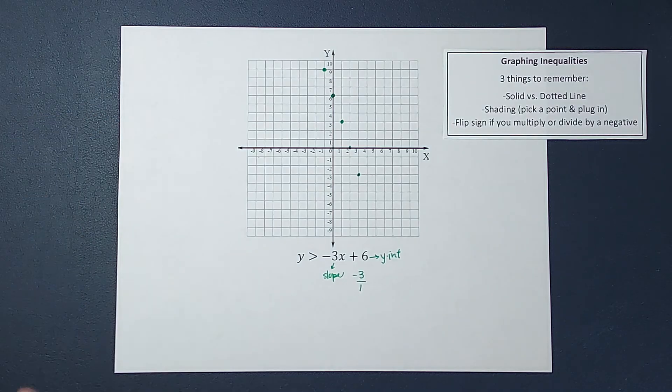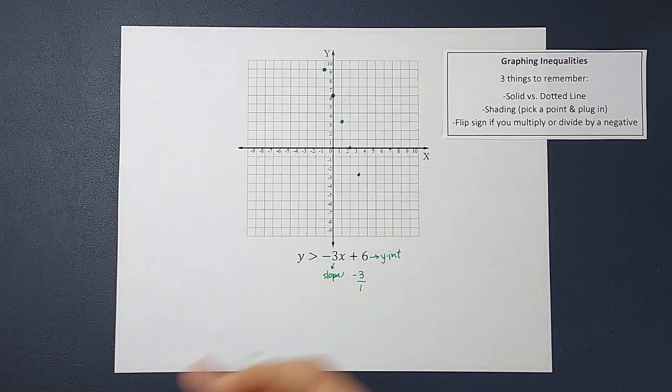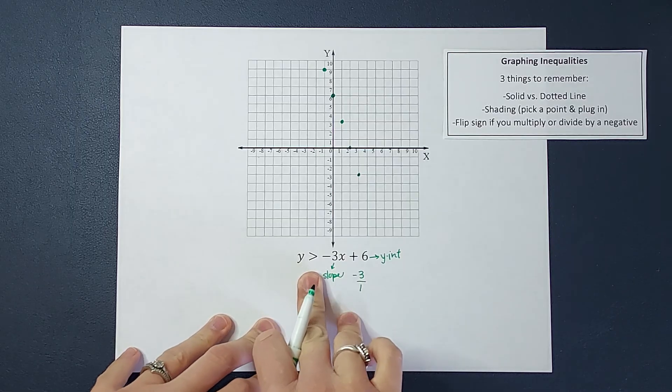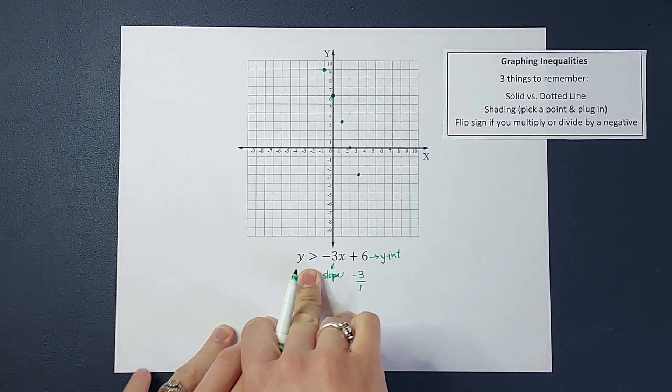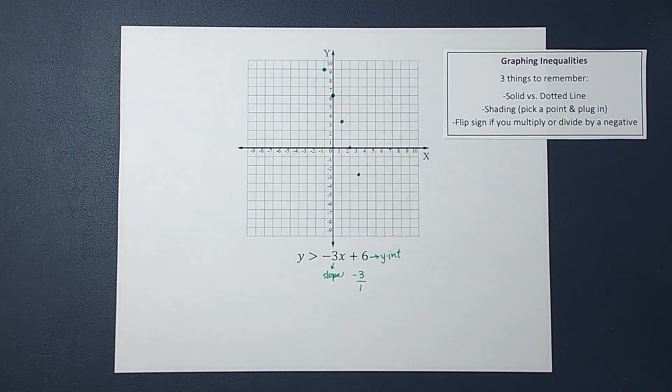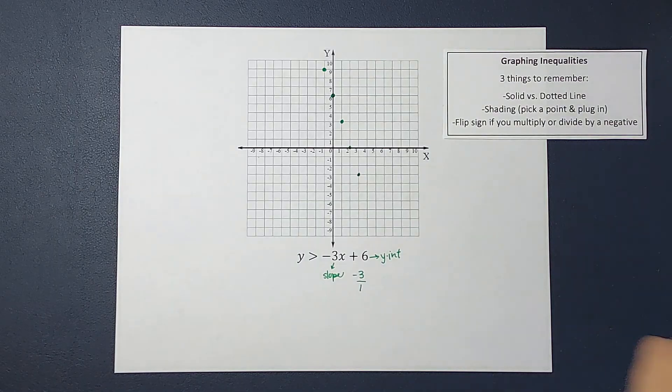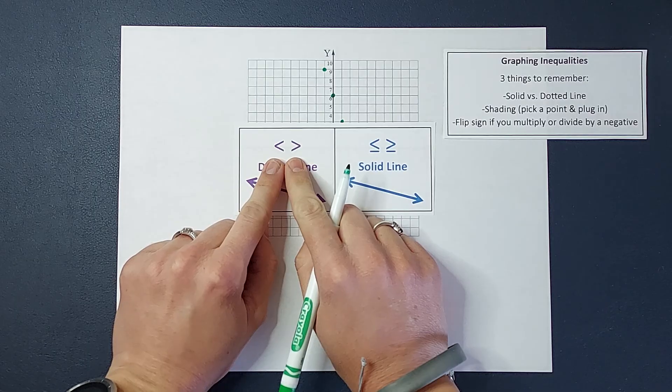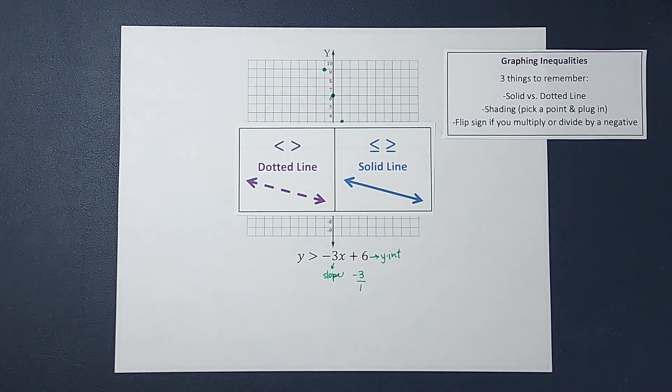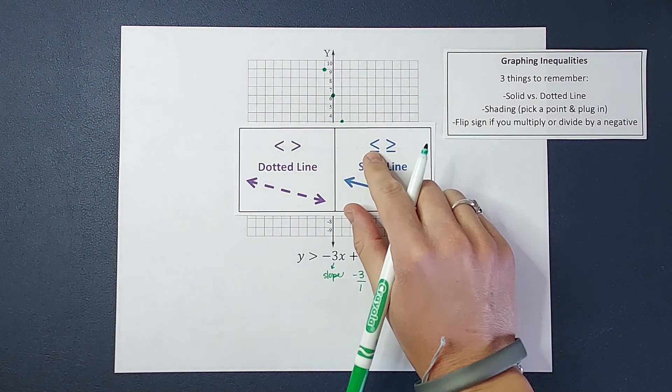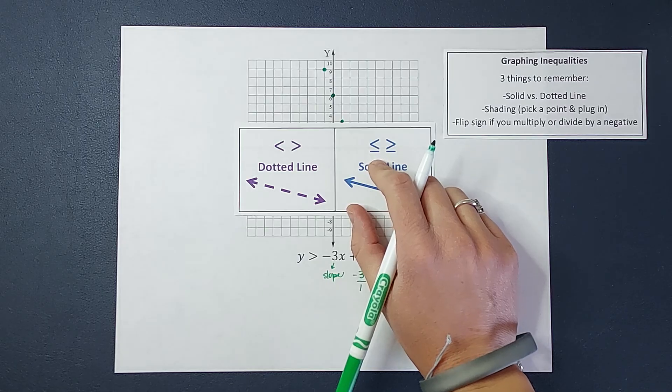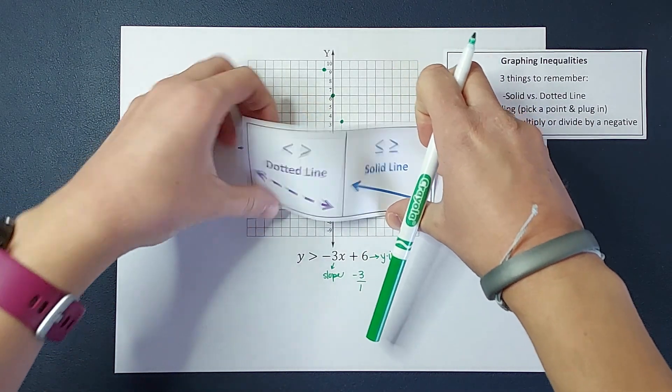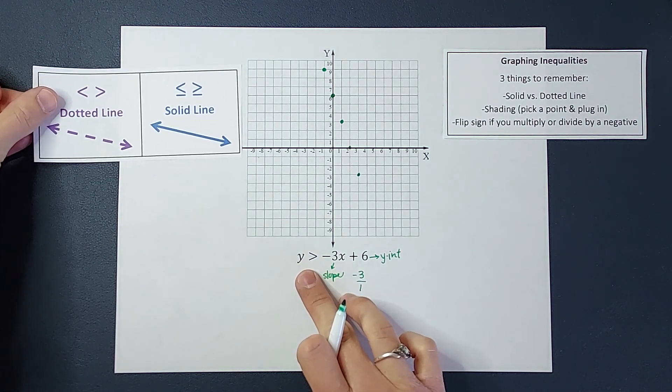Now this is where the first difference is between just graphing a line and graphing an inequality. This is where I need to figure out if I'm going to have a solid or a dotted line. It's pretty easy to remember. If we are less than or greater than, it's going to be a dotted line.